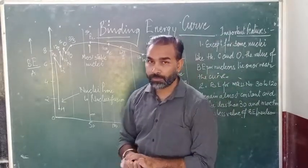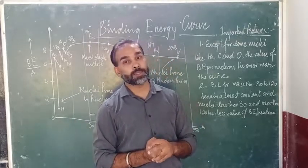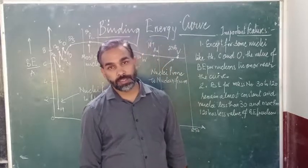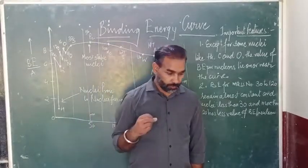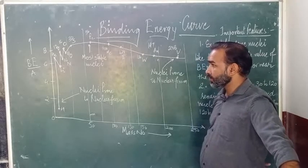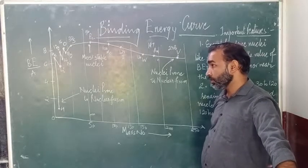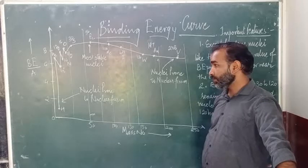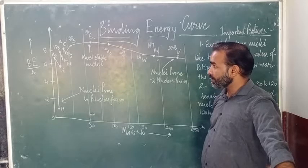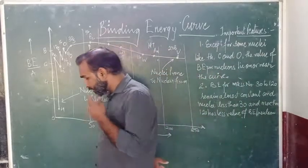In the previous video, we discussed about the concept of binding energy, concept of mass defect, concept of binding energy per nucleon, and how binding energy and mass defect are basically associated with the stability of the nucleus. Through those studies, we generated this curve, which actually tells us so many things about the nucleus. This curve is very important for your exam and for your higher studies. So I will just discuss a brief description about this Binding Energy Curve and the value of binding energy per nucleon.